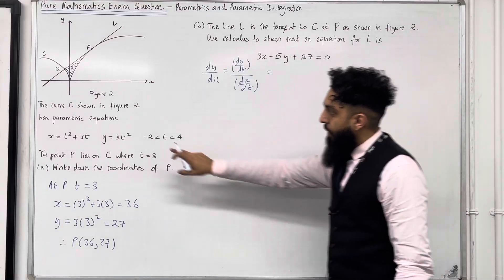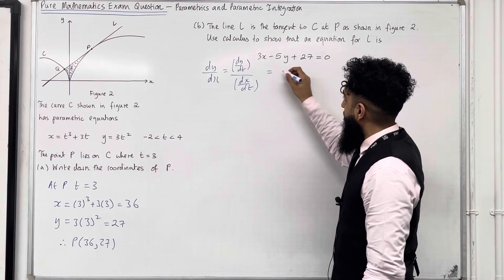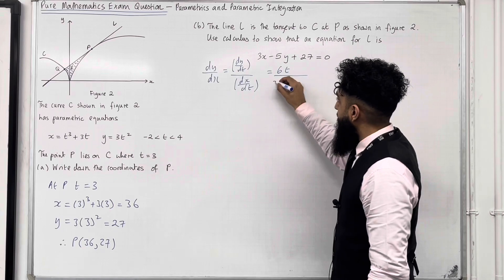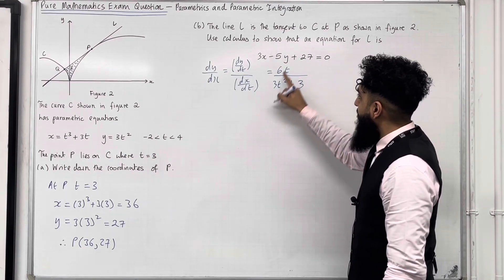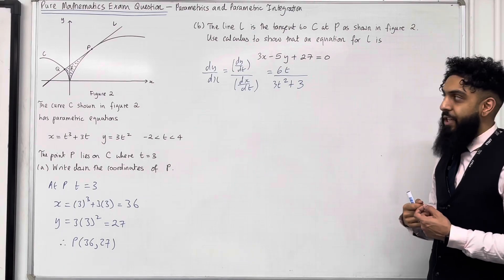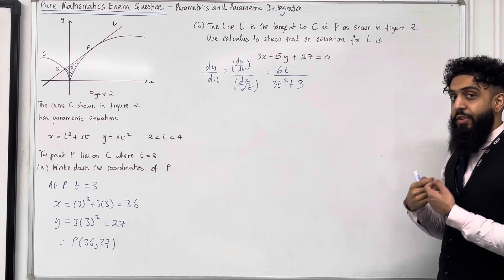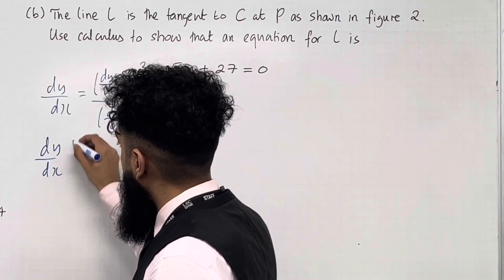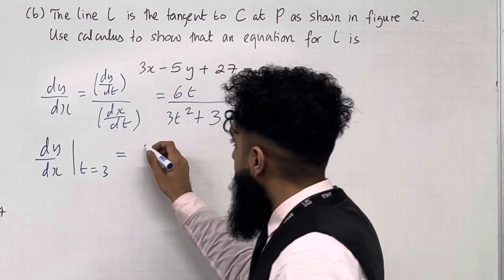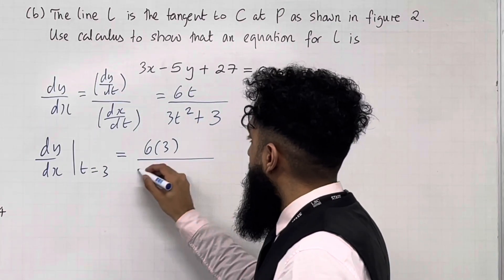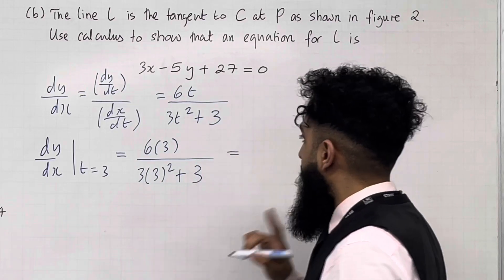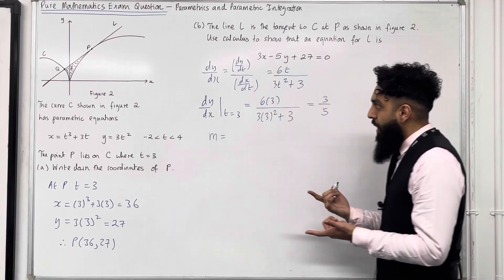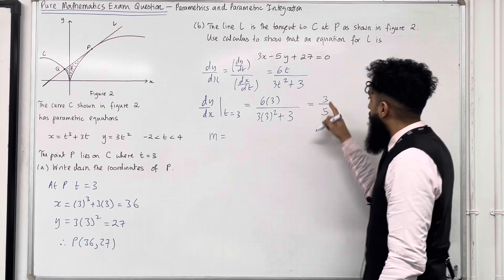Let's differentiate the y parametric: differentiating y = 3t² gives dy/dt = 6t. Now differentiating the x parametric: differentiating x = t³ + 3t gives dx/dt = 3t² + 3. So dy/dx = 6t / (3t² + 3). To find the gradient at point P, substitute t = 3: dy/dx = 6(3) / (3(3²) + 3) = 18/30 = 3/5. So the gradient m of tangent L at point P is 3/5.